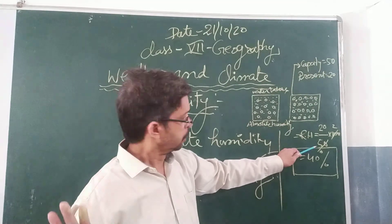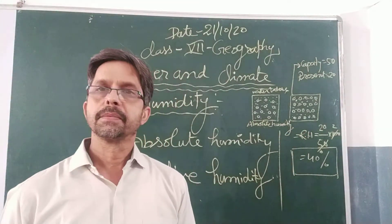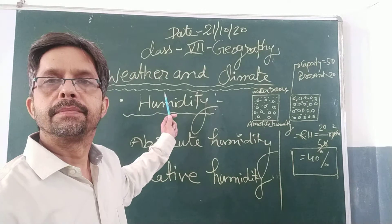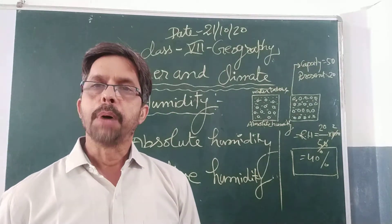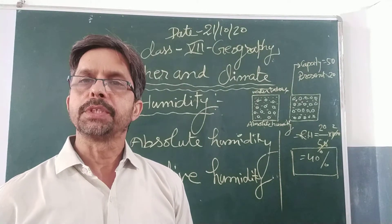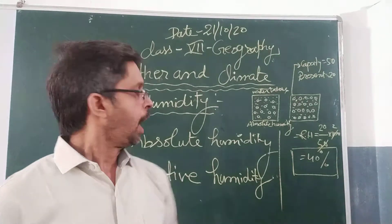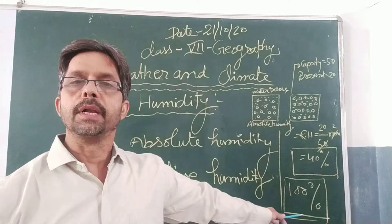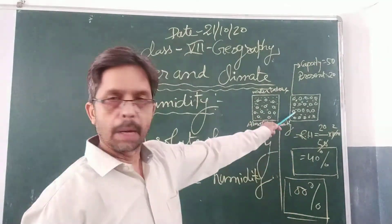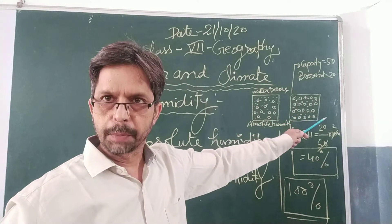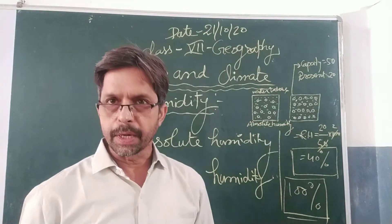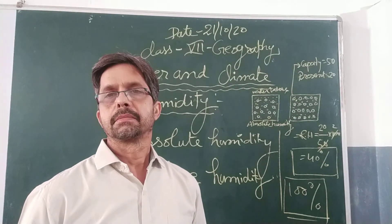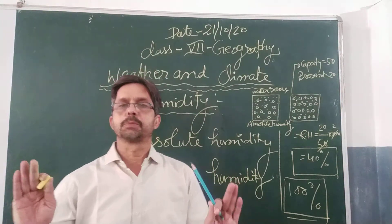So relative humidity is 40%. Humidity is a very important term. When the level reaches 100%, it means the maximum capacity and the actual amount present are also at maximum. This level of air is called relative humidity 100%, and this is the last boundary limit.